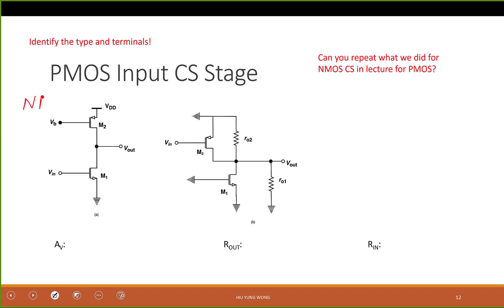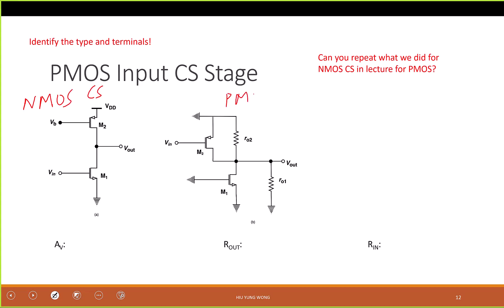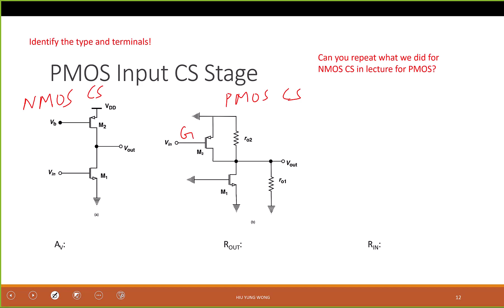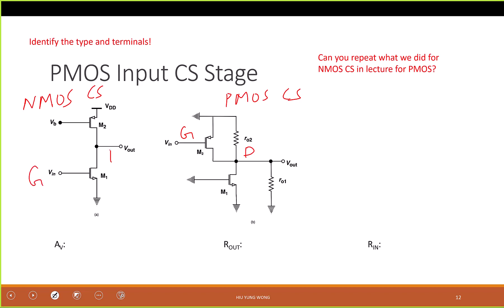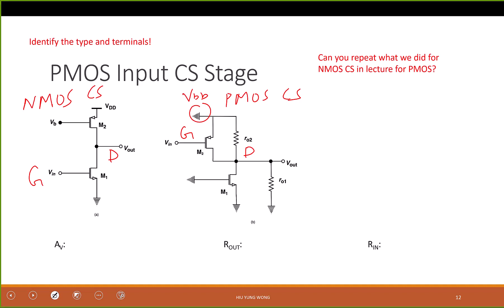This is the NMOS common source amplifier, and this is the PMOS common source amplifier. Let's see if it makes sense. This is the gate, which is the input. This is the drain, which is the output. This is the gate, which is the input. This is the drain, which is the output. This is grounded because this is just VDD shorted — we just shorted it, we did not draw it well.